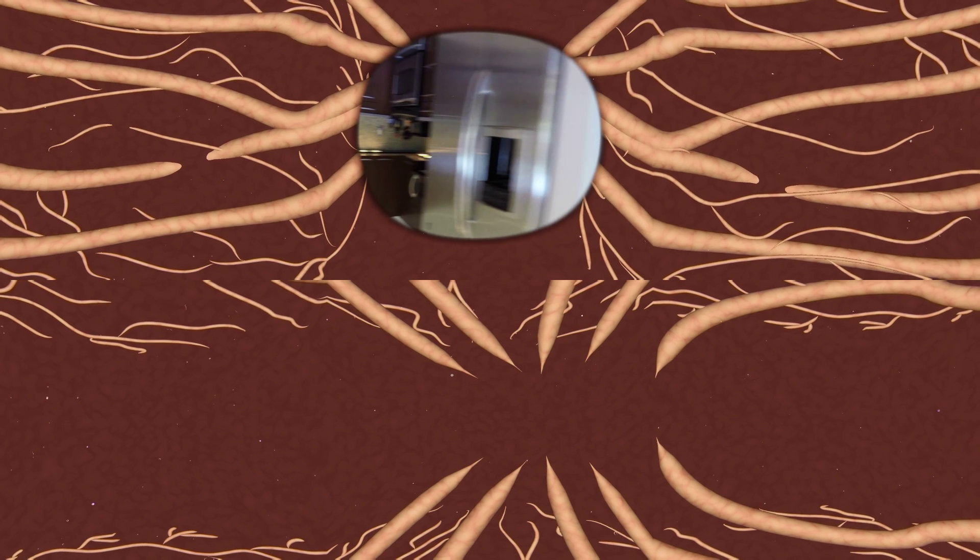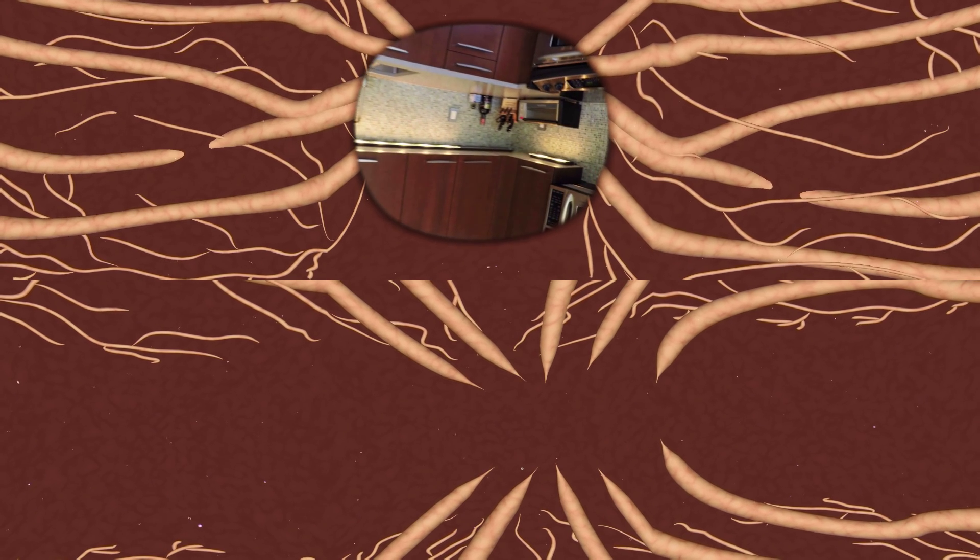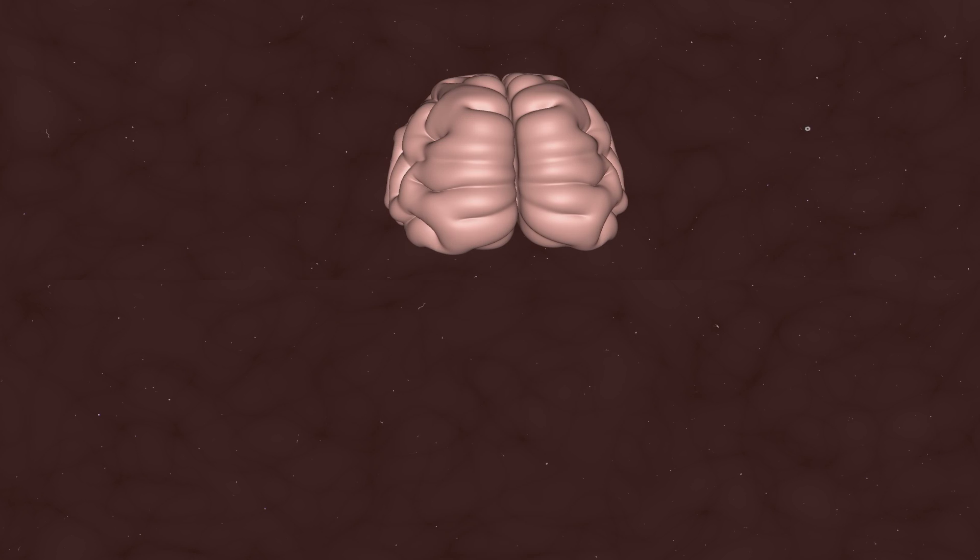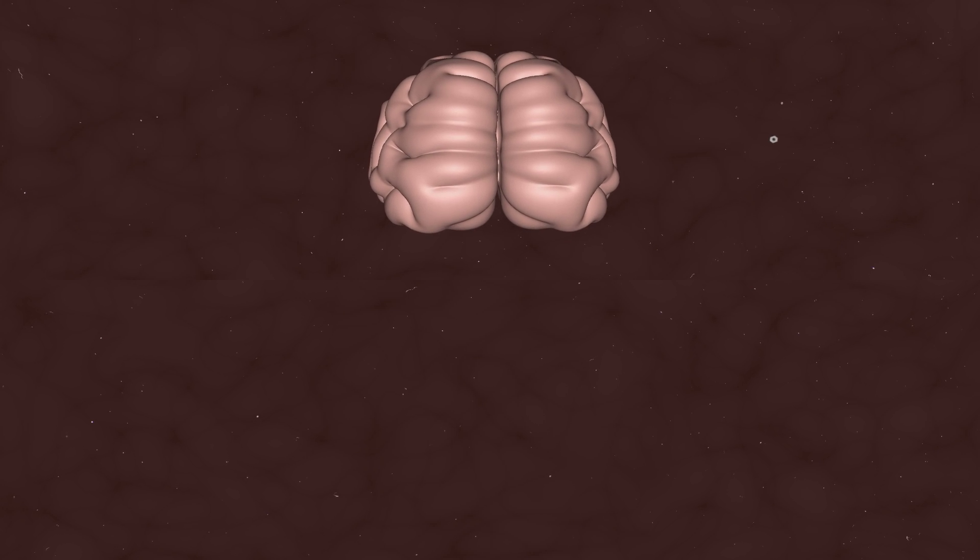After that, the image is transmitted to the brain along the nerves. And the brain flips it back to how it really is. By the way, the only part of the body that has no blood supply is the cornea of the eye. Yeah, that one. It receives oxygen directly from the air. Wait a second.